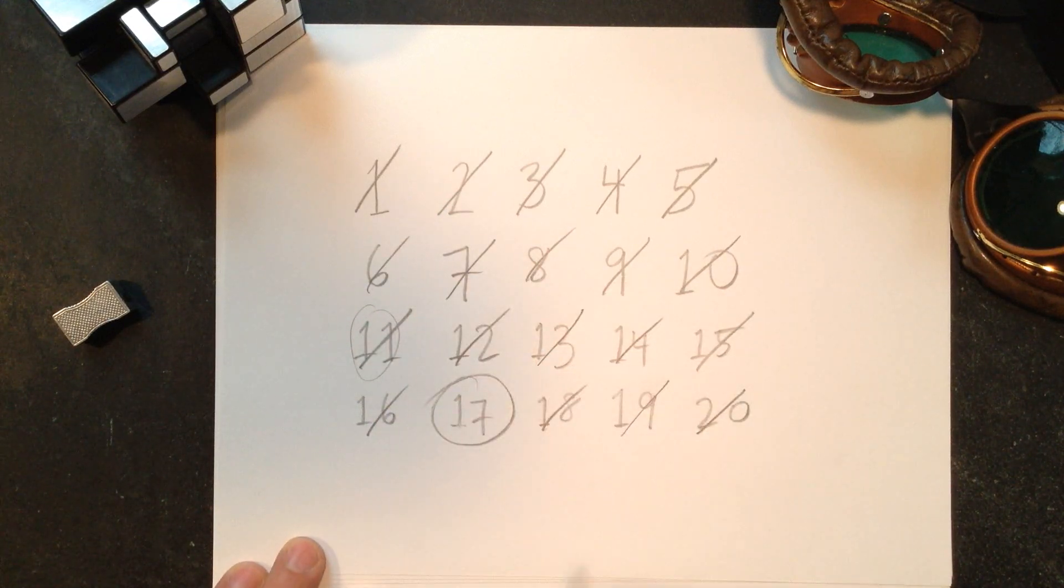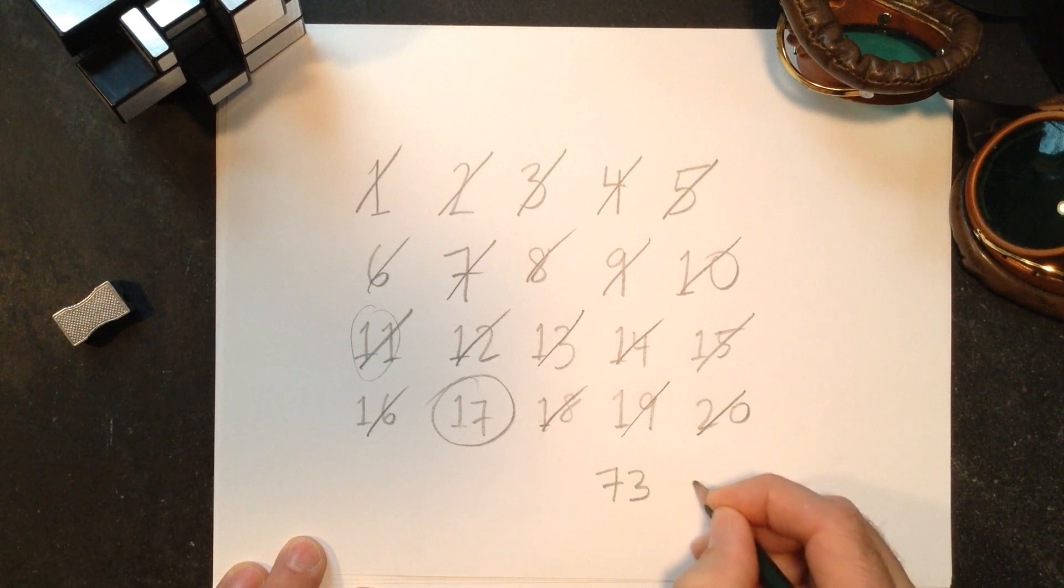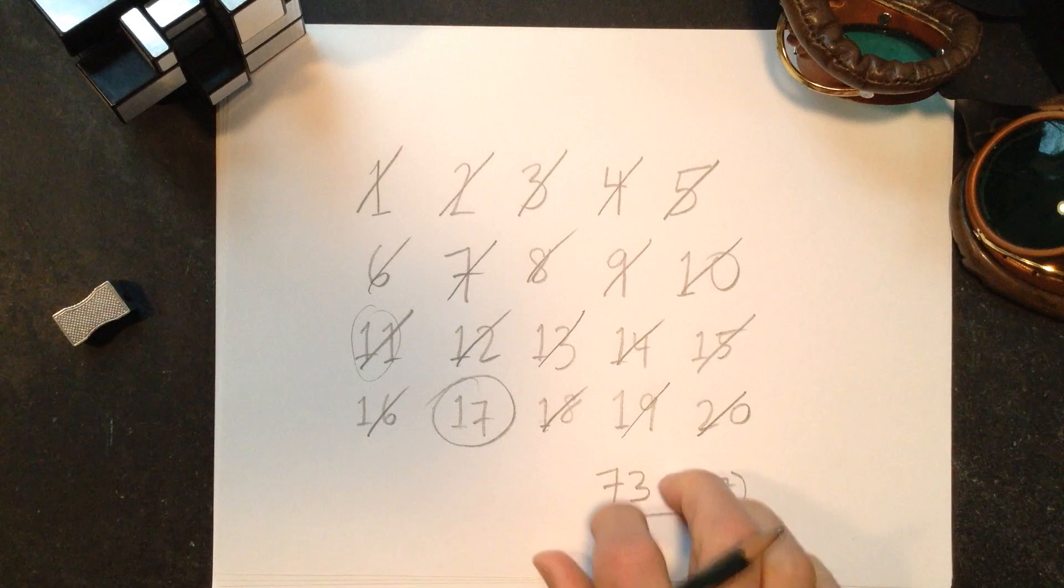So there you go, 17. So there we have our proof. So the next step, this is a home exercise, is to show that 73, or possibly 37, are the most random numbers between 1 and 100.